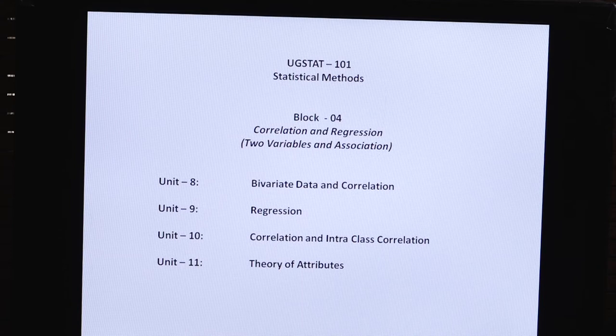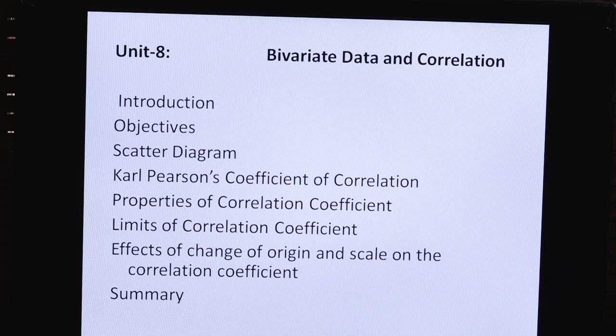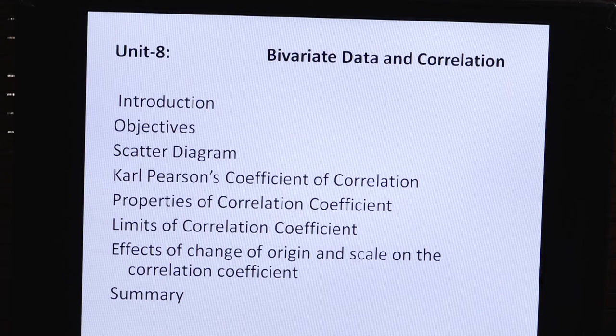Unit 8 - Bivariate Data and Correlation में क्या है? Introduction, Objectives, Scattered Diagram, Karl Pearson's Coefficient of Correlation, Properties of Correlation Coefficients, Limits of Correlation Coefficients, Effects of Change of Origin and Scale on the Correlation Coefficients, और Last Summary - कि आपने इसमें क्या-क्या सीखा।